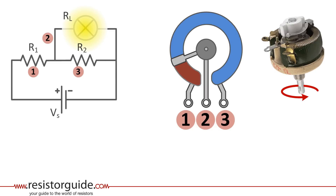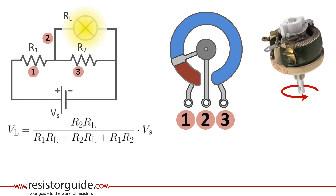We can also see that the current through the lamp changes, causing it to light up. With basic network theory for resistors in series and parallel, we can calculate the voltage across the load. Suppose that the load resistance is much higher than the potentiometer resistance. The formula can be simplified into Vl = R2 divided over R1 plus R2, times Vs.